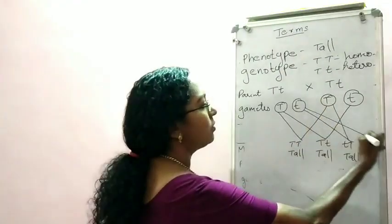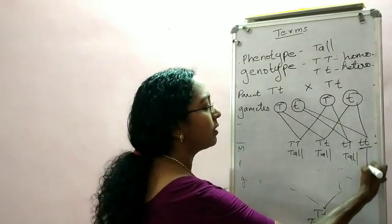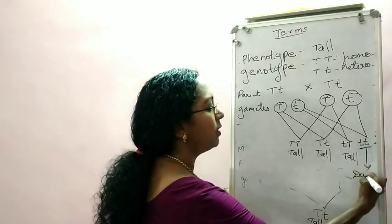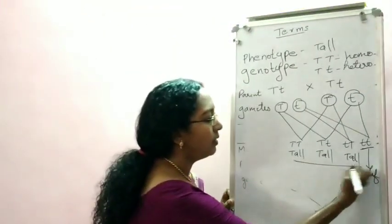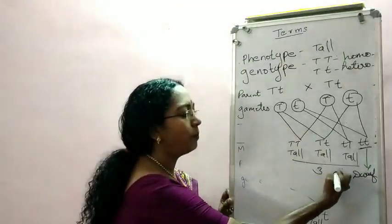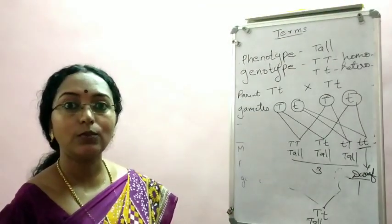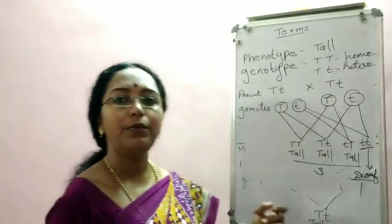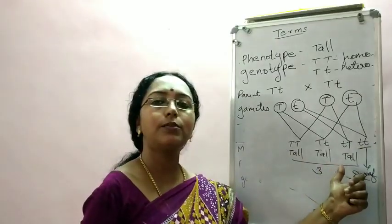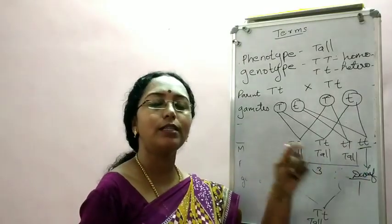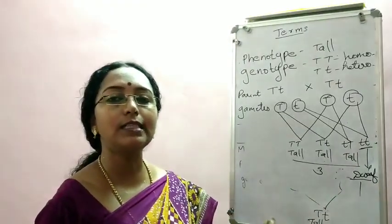Small t can also combine with another small t to give small t, small t — this is actually dwarf. So you can see there are three tall plants and only one dwarf. This is what was stated in the previous section: three-fourths of the plants were tall, and one-fourth — that is one out of four — was dwarf.